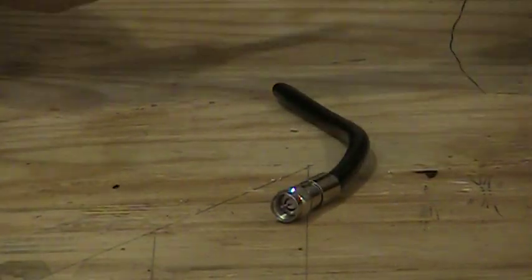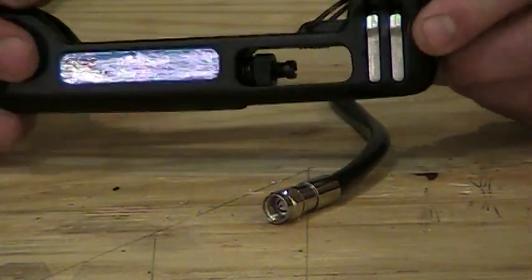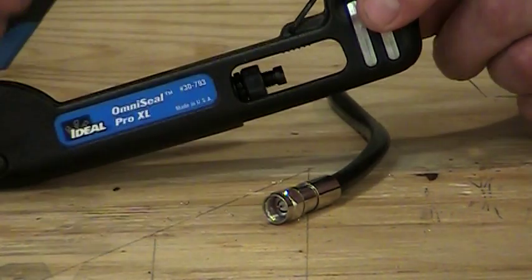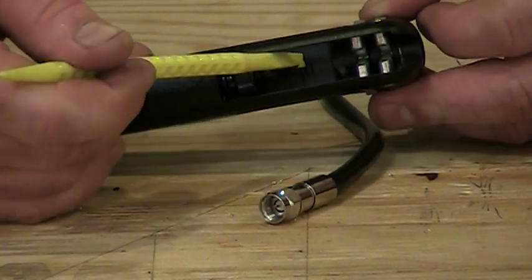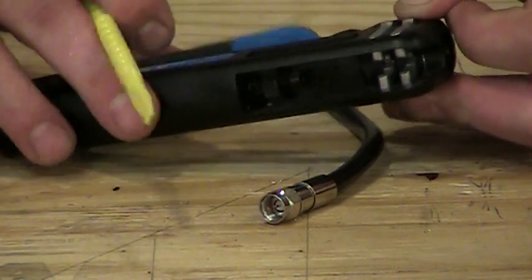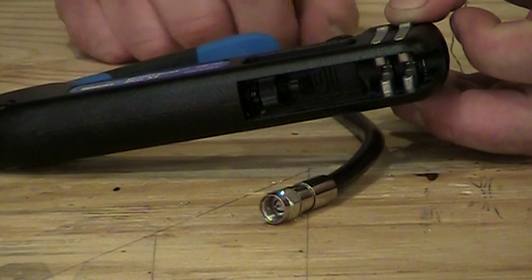We're going to use our compression tool to crimp or compress the connector. The lever moves the ram inside and out. There are markings in the tool right here. The large mark you see there—if I push the tool all the way down, the end of the ram is even with that mark—tells me it's set for all of Ideal's connectors.